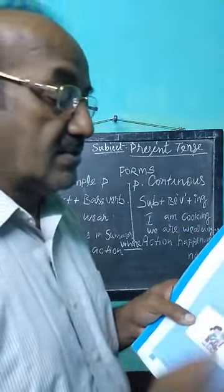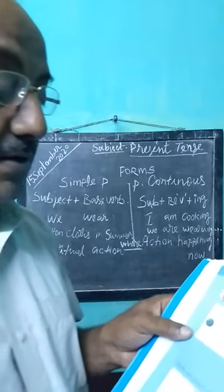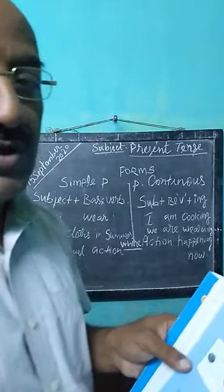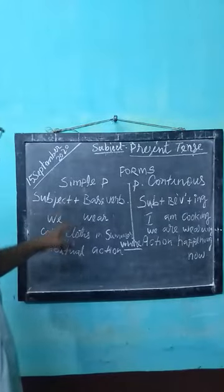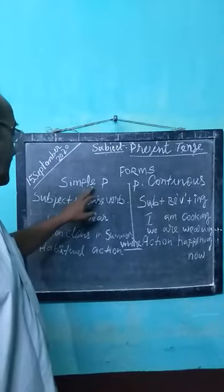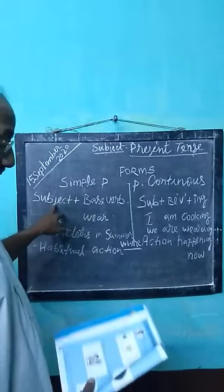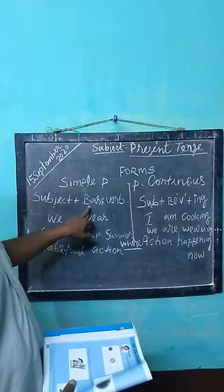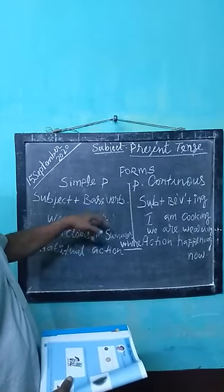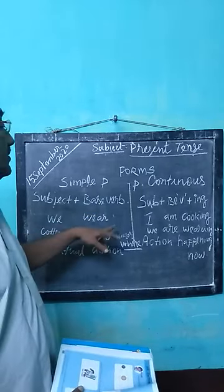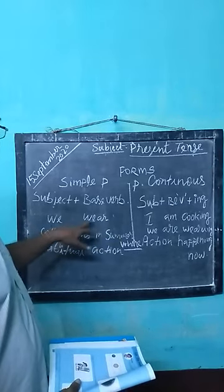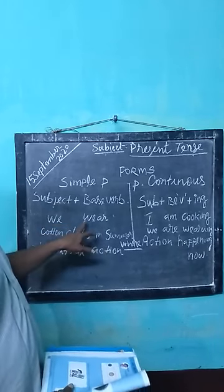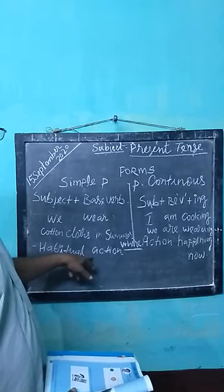And for present tense, what are the structures used? Let's revise yesterday's class. For universal facts, simple present: subject plus verb. For example, 'the earth goes around the sun.' And: 'we wear cotton clothes in summer' — this is a habitual action.